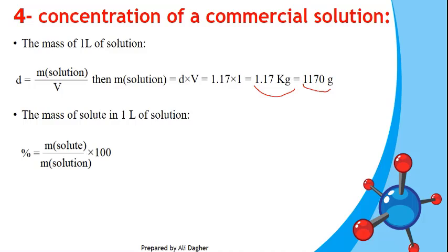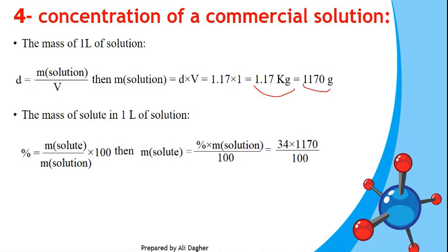Using percent by mass, which equals mass of solute over mass of solution times 100, the mass of solute equals percentage times mass of solution divided by 100. With 34% and a solution mass of 1170 grams, the mass of HCl (solute) equals 397.8 grams. This is the mass of solute in one liter of solution.